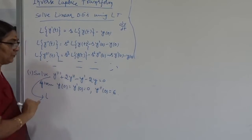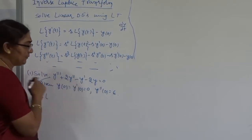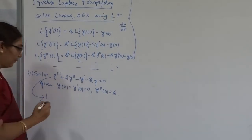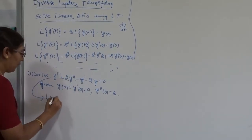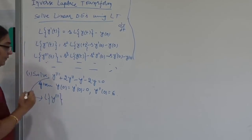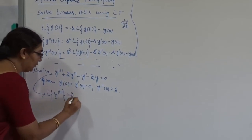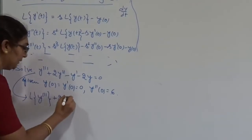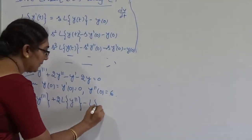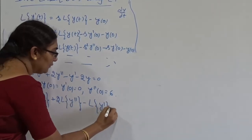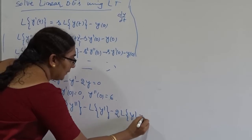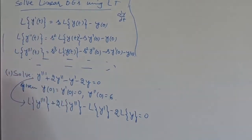Once you take the Laplace transform on both sides, how many terms do you have on the left-hand side? 1, 2, 3, 4. Therefore, from the linear property, I am going to take the Laplace transform of each term: Laplace of Y double dash, minus Laplace transform of Y dash, minus 2 into Laplace transform of Y, equal to Laplace transform of 0, which is equal to 0.